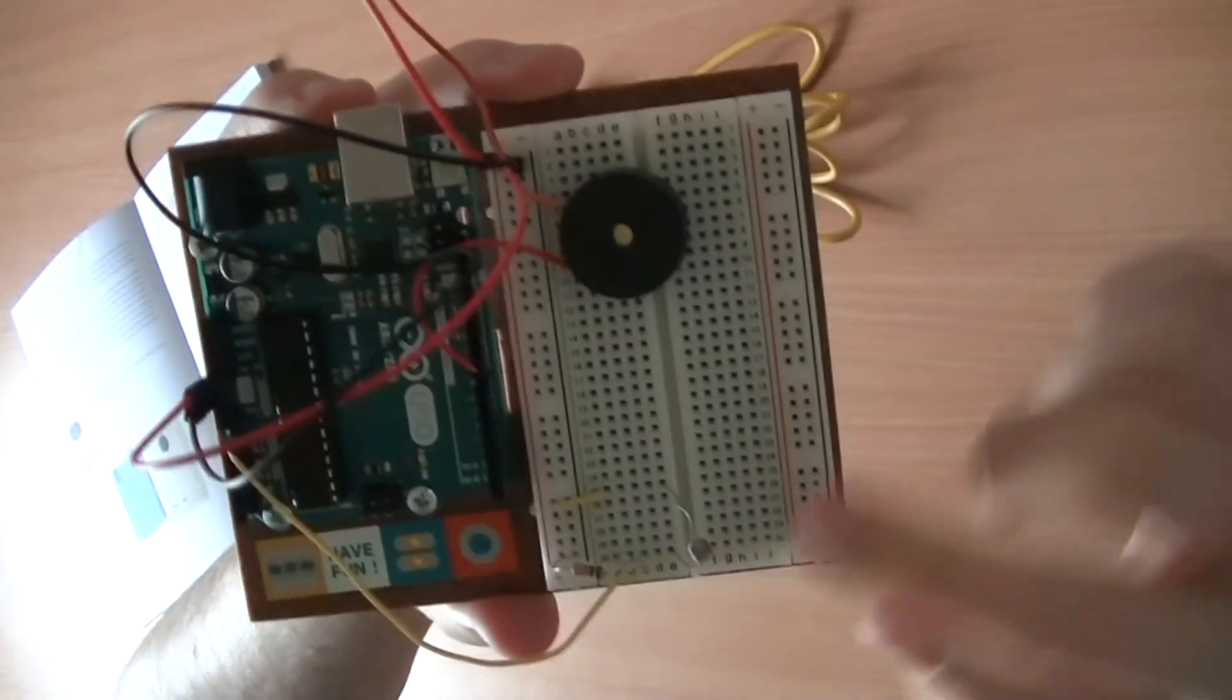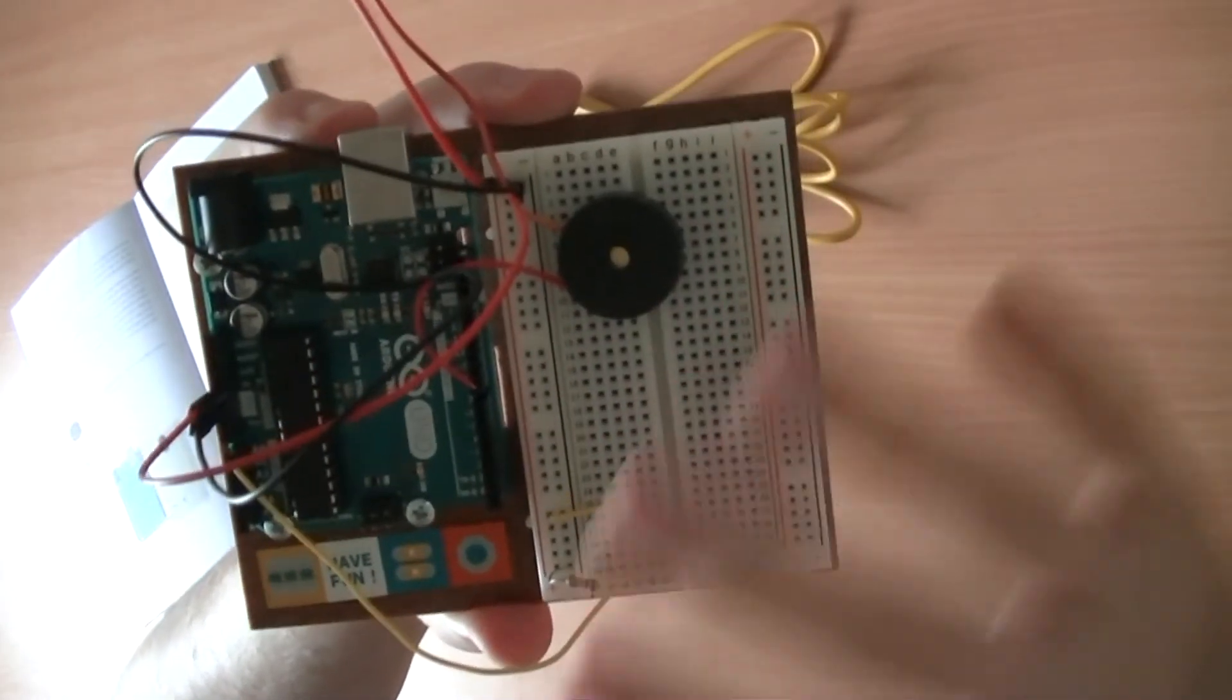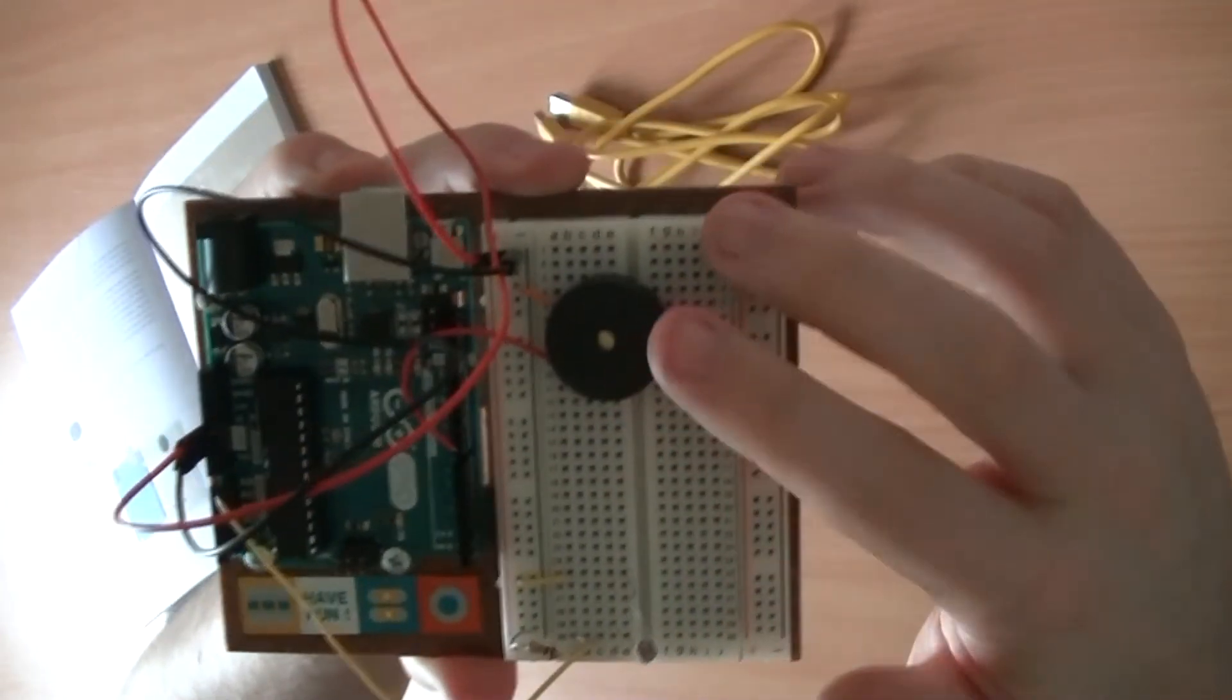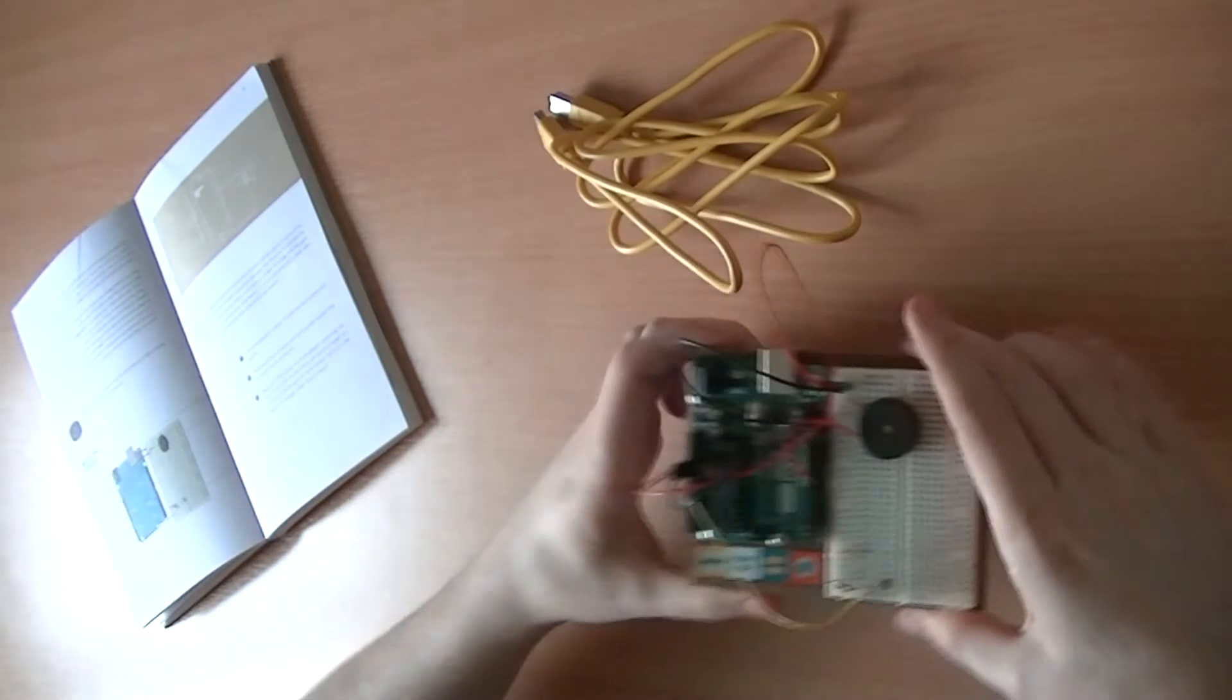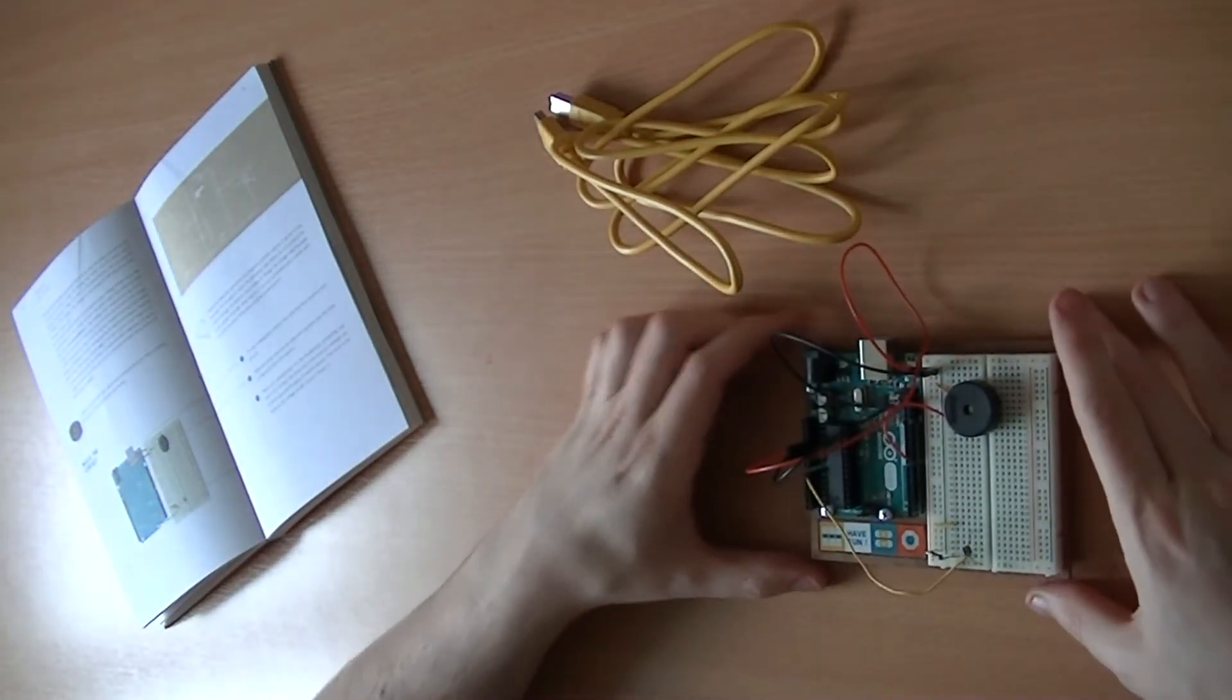All we're going to have is the photosensor which is our input. When we move a hand over that, hopefully the output here, which is the buzzer, will actually change pitch. So let's crack on with the code now and I'll swap over to the computer.